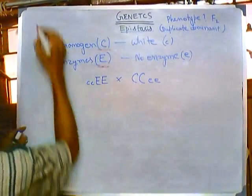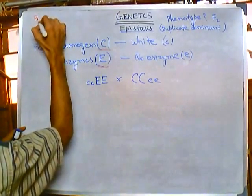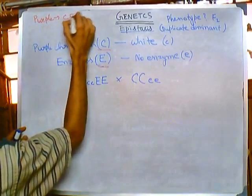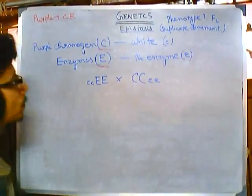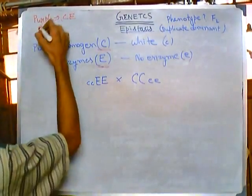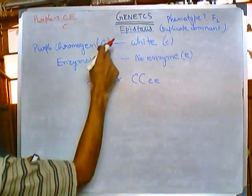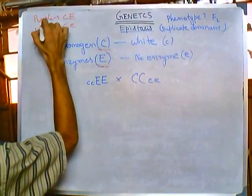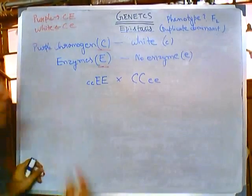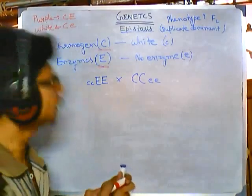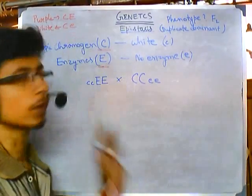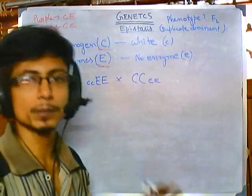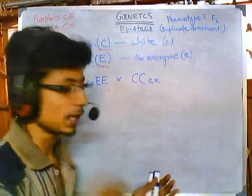For a flower to become purple, we must have both cap C and cap E. If someone has cap C with small e, it will give a white flower, not a purple one. This is the key to understanding this problem — once you understand this part, the rest follows simple probability rules.